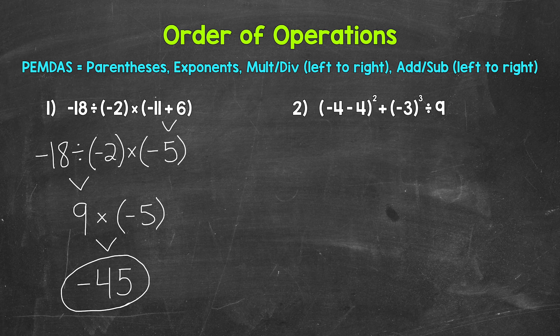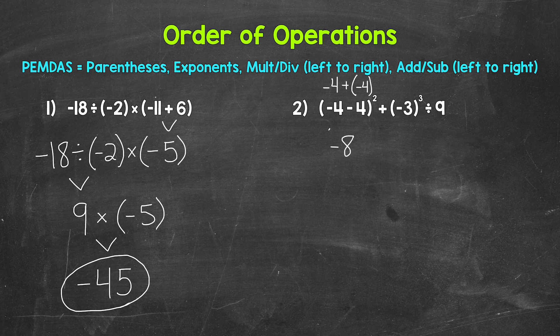Now remember, one thing we can do when we have subtraction is add the opposite — that can help when we have problems involving negatives. So negative 4 plus the opposite of positive 4 is negative 4, giving us negative 4 plus negative 4, which equals negative 8. We need to keep that negative 8 within parentheses because we are squaring this result. It's very important to keep that negative result in parentheses, because again, we have an exponent.